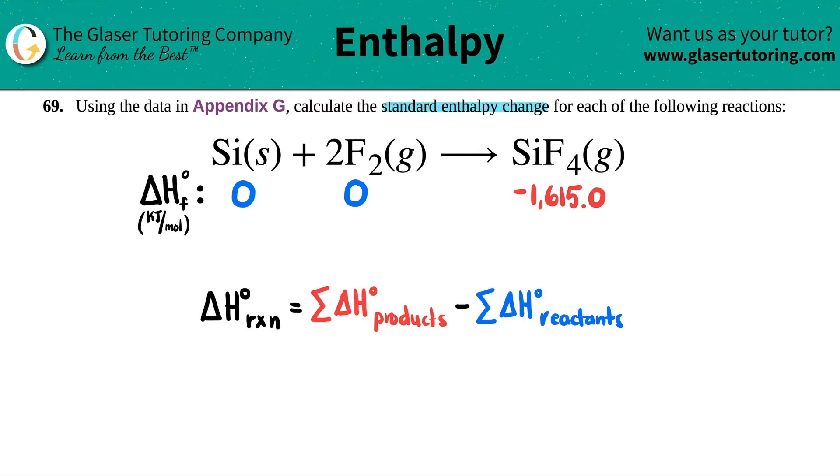Technically what we would do is we would have to multiply the enthalpy that we see in those Appendix values by how many we have in our formula. Now I already see that they gave me coefficients here. So I'm assuming that it's balanced.